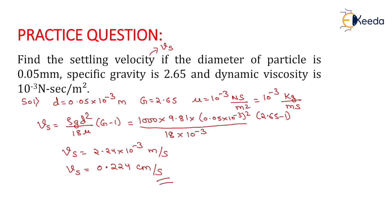We have calculated the settling velocity of a particle with diameter 0.05 mm and specific gravity 2.65. That is all about this numerical. Thank you very much students.